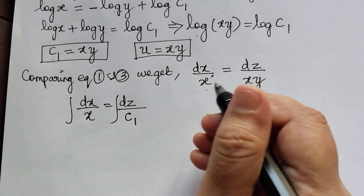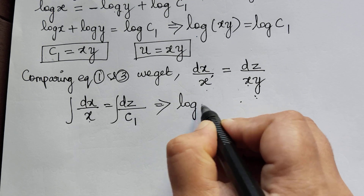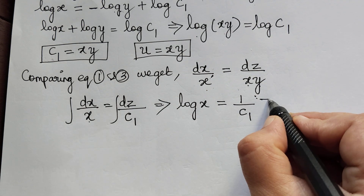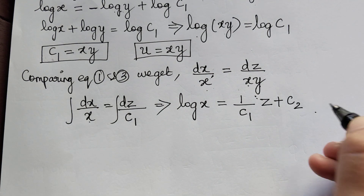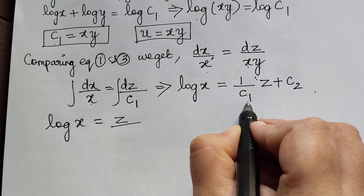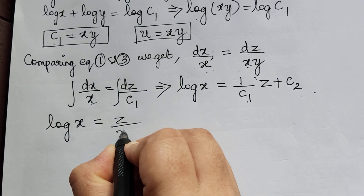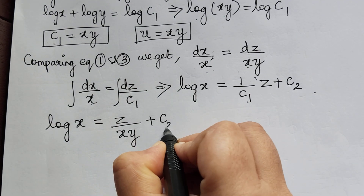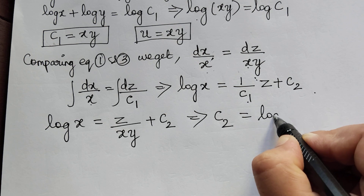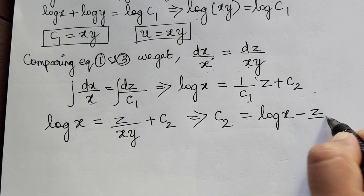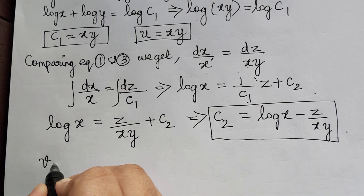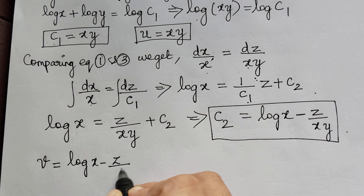Now we can integrate on both sides. The integral of dx by x is log x, equal to 1 by c1 — since c1 is a constant — times the integral of dz, which is z, plus c2. So we get log x equals z by c1, then replacing c1 by xy, we get log x equals z by xy plus c2. Therefore c2 equals log x minus z by xy. This is the second solution: v equals log x minus z by xy.